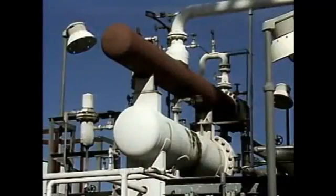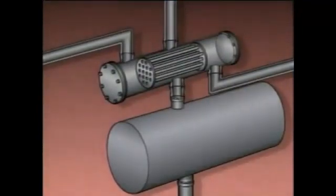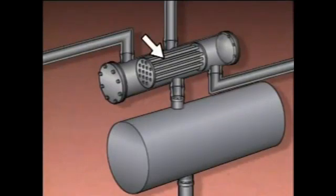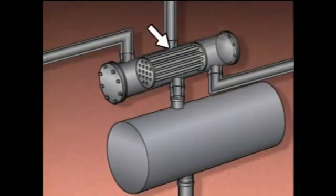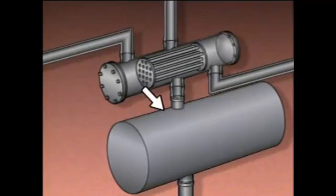To get a better understanding of how a condenser operates, let's look at an illustration of a condenser that uses cooling water to condense product vapors into distillate. This condenser has a shell, tubes, tube sheets, a vapor inlet, a cooling water inlet called a head, a distillate outlet, a cooling water outlet head, and a receiver.